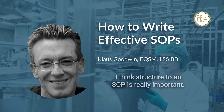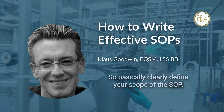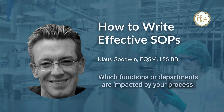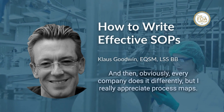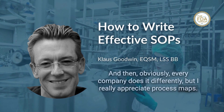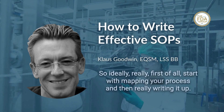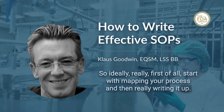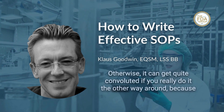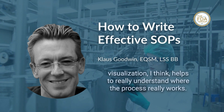Structure in an SOP is really important. Clearly define the scope — which functions or departments are impacted by your process. Every company does it differently, but process maps are really valuable. Ideally, start by mapping your process before writing it up, because doing it the other way around can get quite convoluted. Visualization helps to really understand where the process works.